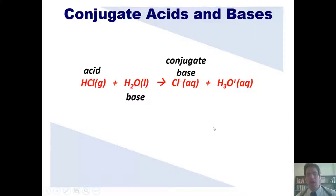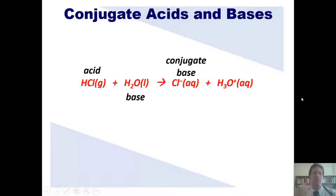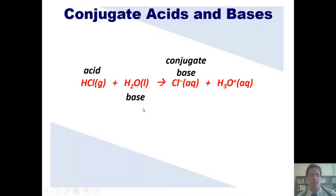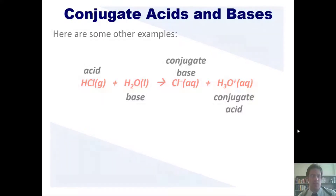Looking at the right side of the equation, the thing that emerged from our base, water, is hydronium. That is the product that forms when the base accepts a proton. The hydronium is called this base's conjugate acid. Hopefully that makes sense — let's take a look at some other examples.